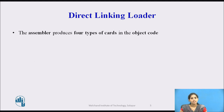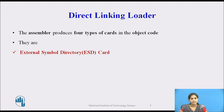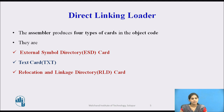The assembler produces four types of cards in the object code. They are: first, the External Symbol Directory card; second, the Text card; third, the Relocation and Linkage Directory card; and fourth, the End card.